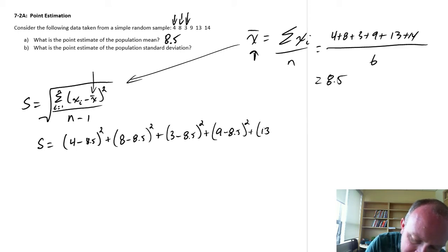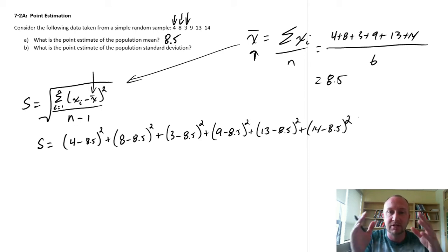Plus 9 minus 8.5 squared. Plus 13 minus 8.5 squared. Plus 14 minus 8.5 squared.